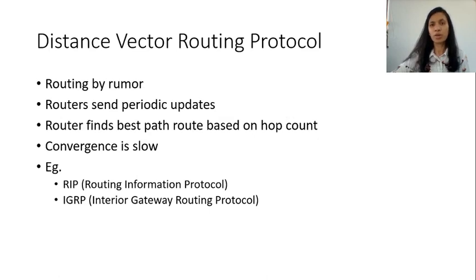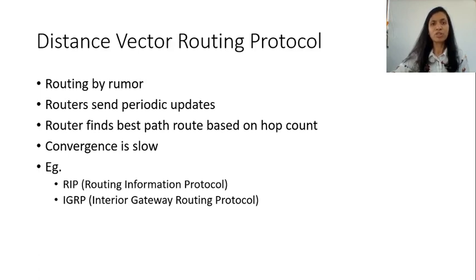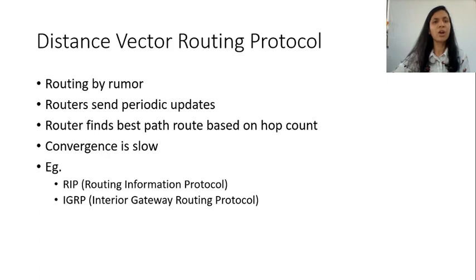Let us move on to distance vector routing protocol in detail. The distance vector routing protocol relies on periodic updates — each router on which you have configured the distance vector routing protocol sends a periodic update to its neighbor. The update message contains the routing table of itself. Using this routing table, the neighbor router updates its own routing table, and hence this is called routing by rumor. The distance vector routing protocol uses hop count as its metric. Since the routers rely on periodic updates, the convergence is slow.